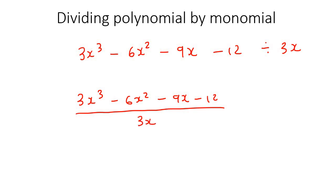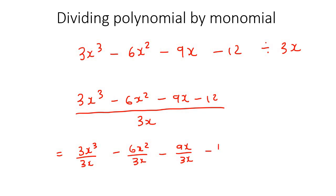What I would then do is split all of it up. So you would split it up like this: 3x to the power of 3 over 3x, take away 6x to the power of 2 over 3x, take away 9x over 3x, take away 12 over 3x. And then you would just simplify each part. You would look at the x's and cancel them out.